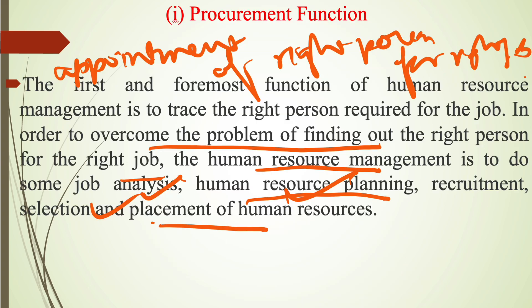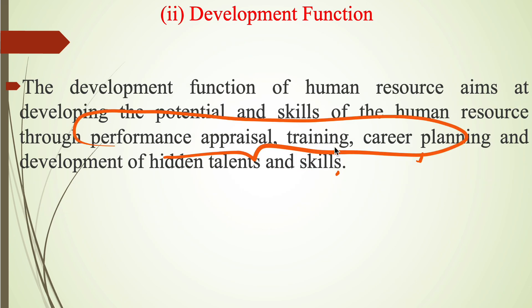The procurement function is related to the appointment of the right person to the right job, done through job analysis, human resource planning, recruitment, selection, and placement. The development function is carried out through job training and development processes of employees working in the organization.